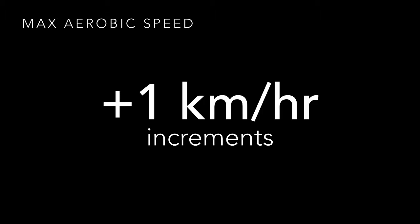To measure MAS, you'll begin running on a treadmill with the initial speed set between 8 and 12 kilometers per hour — 8 kilometers per hour for someone who's untrained, and 12 for a more elite athlete. You run each step at 2-minute increments. At the end of 2 minutes, speed is then increased by 1 kilometer per hour for the next 2 minutes. This stepwise progression continues until the athlete can no longer maintain that speed. The last completed step is then used to determine the MAS.